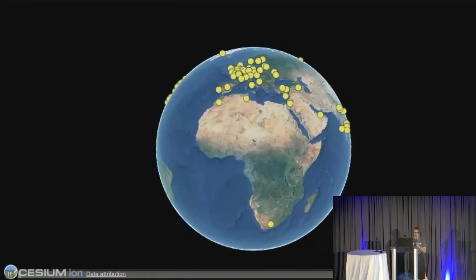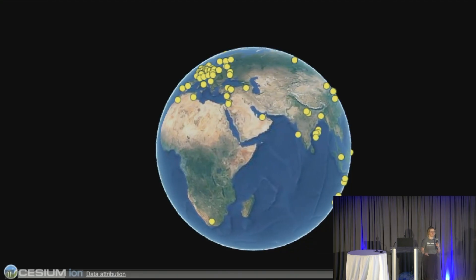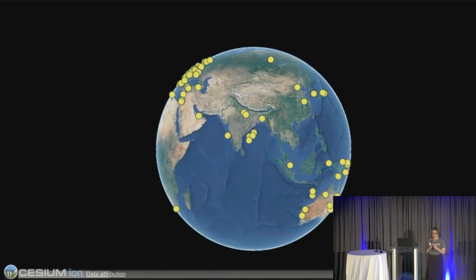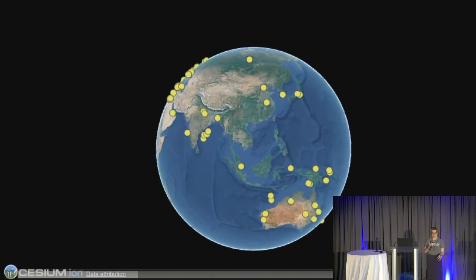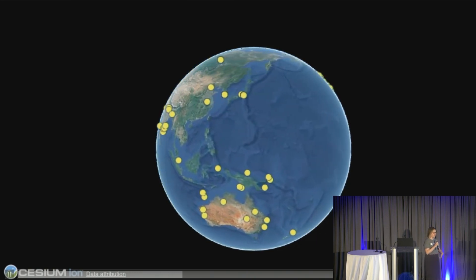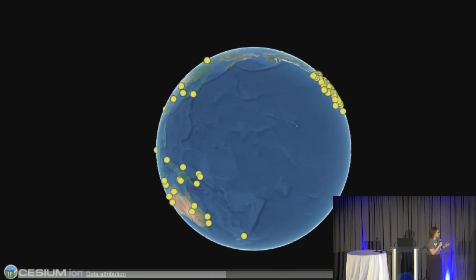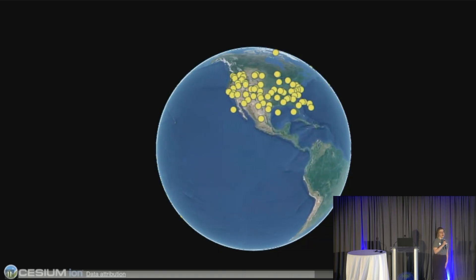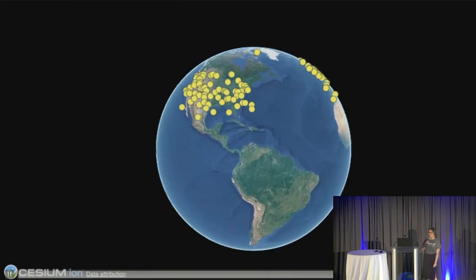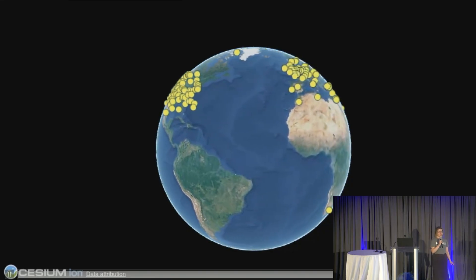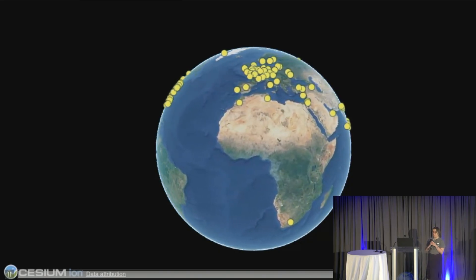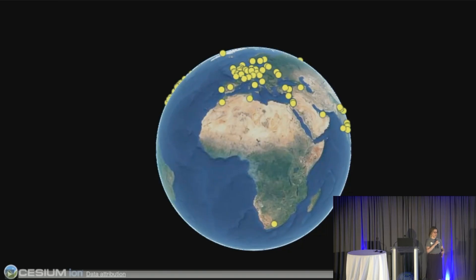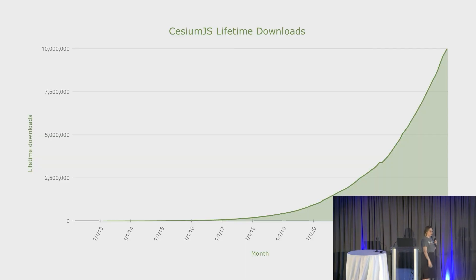First things first, I wanted to start with the reason we're all in a room together, which is the amazing community that has supported CesiumJS and Cesium open source in general. Being open source, we've been able to get contributions from all over the world. We have over 13,000 stars on GitHub and over 13 million downloads. That's thanks to the amazing community here — everybody who's ever commented or posted on the forum. So thank you.